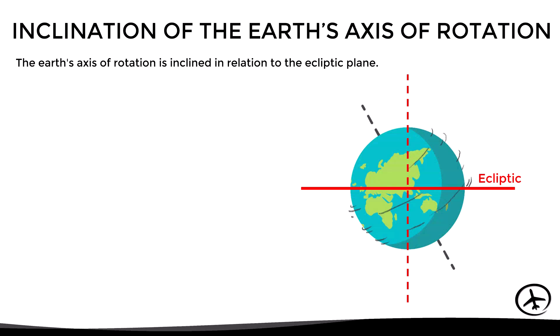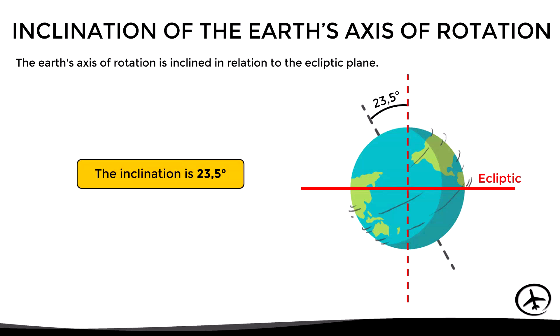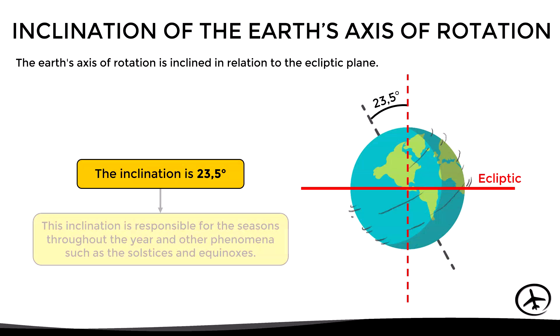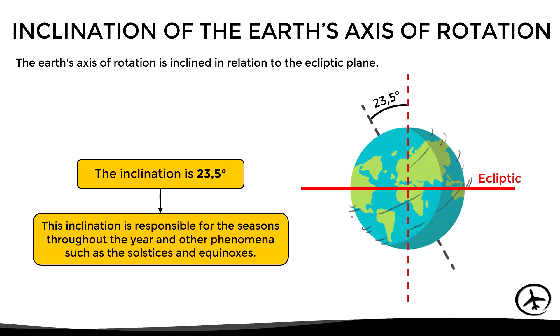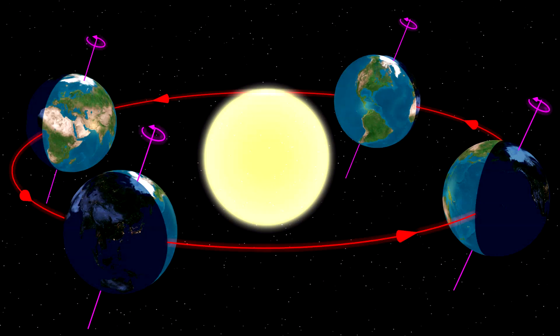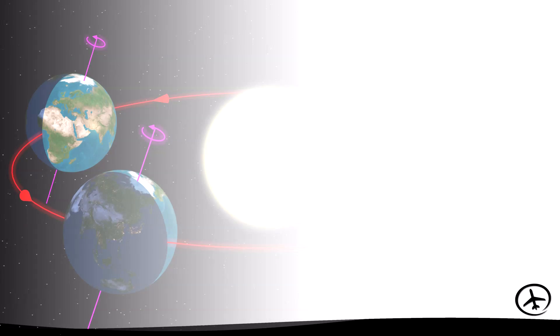The earth's axial inclination is around 23.5 degrees, which is responsible for the seasons throughout the year and other phenomena such as the solstices and equinoxes. These phenomena occur because the solar radiation received by a certain area of the earth changes throughout the year, which has significant implications for weather conditions. However, we will not go into detail with this.